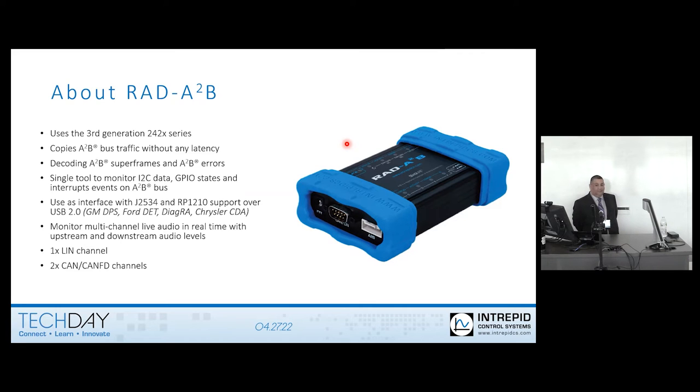Our device does use the third generation, which is a 242X series chip. I know there's a newer version of it, which is a 243, and that will have a version of that later. We're expecting to have something like that later in the year. This will copy your bus traffic without any latency. This tool can monitor your I2C data, GPIO states, and your interrupts, all on the same bus. The device does have support for J2534 as well as your RP1210. So you can use like GM SPPS to program. You can also use the Ford IDS, Dura, and Chrysler wiTECH. The next point at the bottom, which says monitor multi-channel live audio, is really more of a Vehicle Spy portion, which I'll show in a later slide what that means.